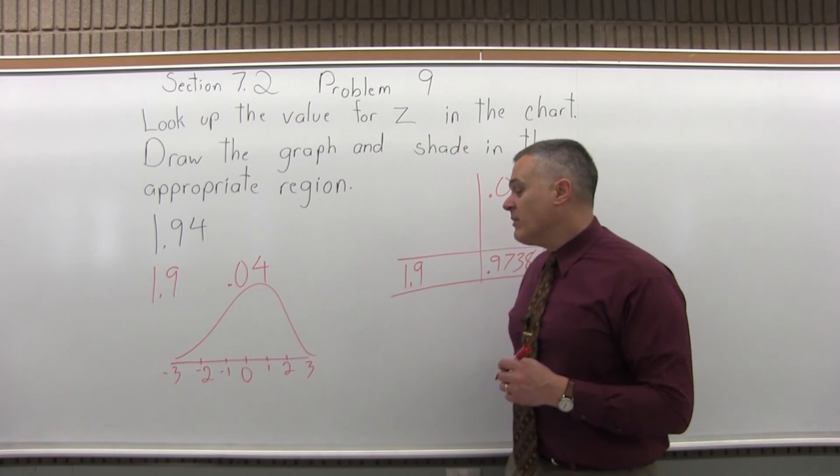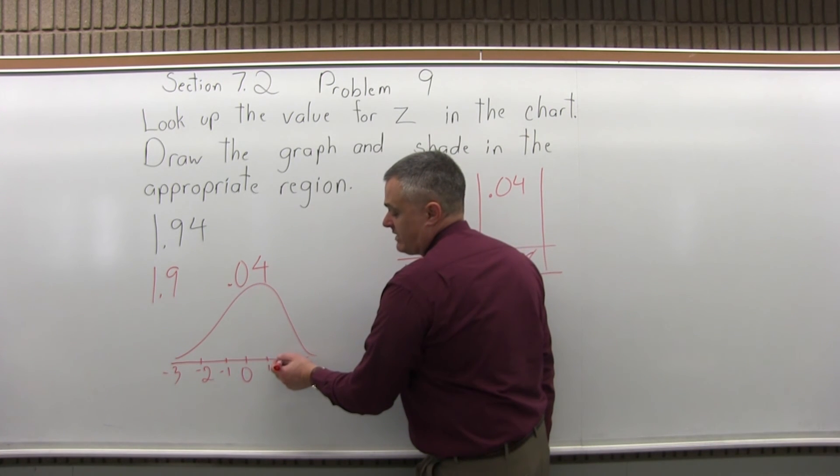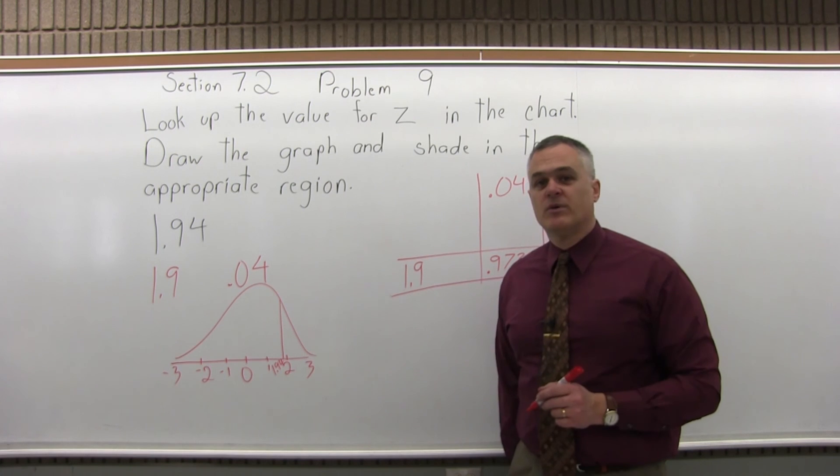So now the 1.94, it would be a number along the bottom. So 2, right here, 1.94 would be almost out to the 2. So I'll put a vertical line at what I feel 1.94 would be.